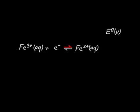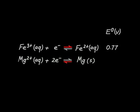According to our electrochemical series, the iron half reaction should produce 0.77 volts, and the magnesium half reaction should give us 2.38 volts. So we predict that a voltmeter will show a reading of about 3.15 volts.